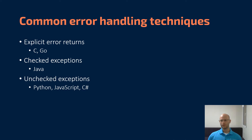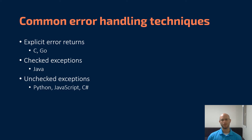There are three mainstream common error handling techniques in most languages today. You have explicit error returns, which is common in languages like C and Go. You have checked exceptions, popularized by Java. Then you have unchecked exceptions in many other languages, including Python, JavaScript, and C Sharp.